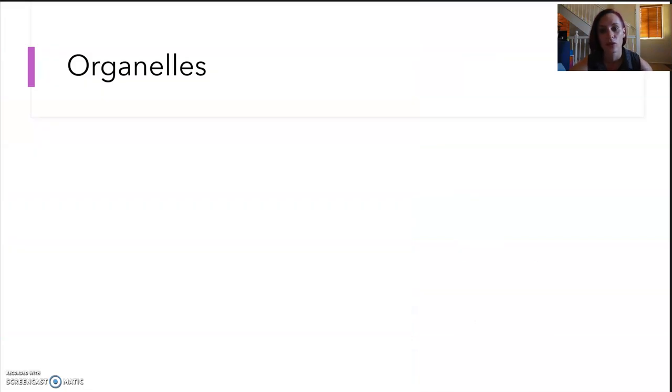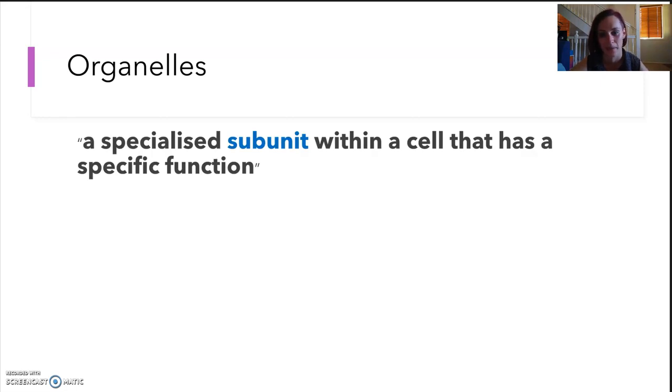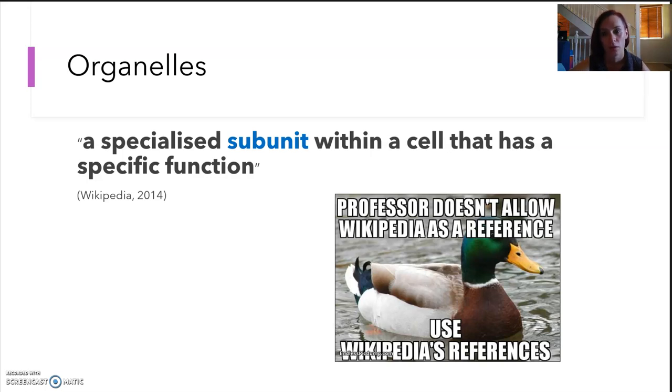Organelles. In order for a cell to meet its base level requirements, it's going to need some machinery to do that. And organelles are indeed that. They are little organs. So there's an awful lot of these, like a lot. You would have learned some in year eight, but I'm going to speed through these. Please make sure you do some reading to supplement any of this, or have a look at your syllabus guide to make sure you know which ones are important.